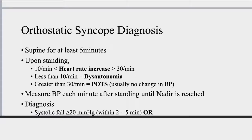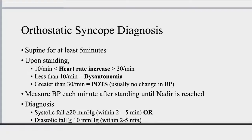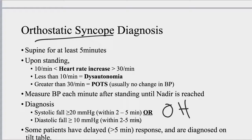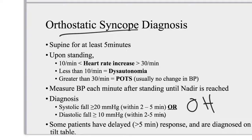If systolic blood pressure falls greater than 20 mmHg, typically between two to five minutes, that suggests orthostatic hypotension, which is not necessarily the same as orthostatic syncope. There are three types: immediate (within two minutes), classical (two to five minutes), and delayed (greater than five minutes). Normally, systolic should drop only five to ten mmHg while diastolic actually rises five to ten. A fall greater than ten mmHg in diastolic constitutes orthostatic hypotension. For delayed orthostatic syncope occurring more than five minutes after standing, a tilt table test is used for diagnosis.